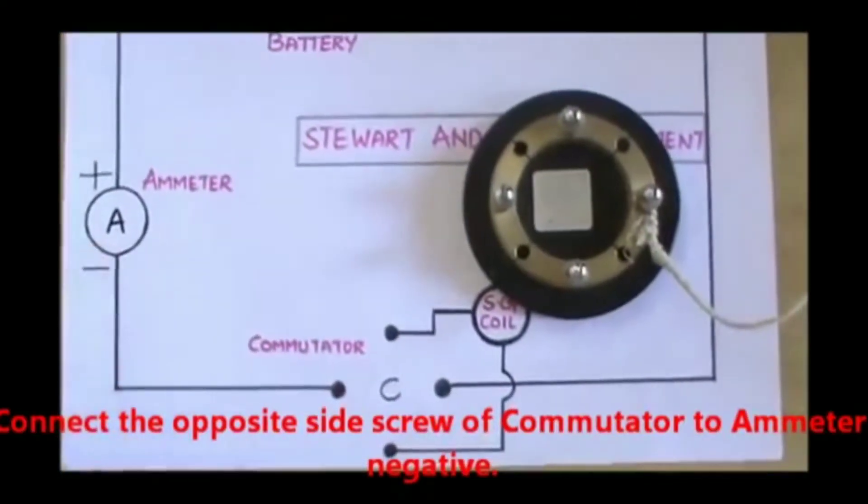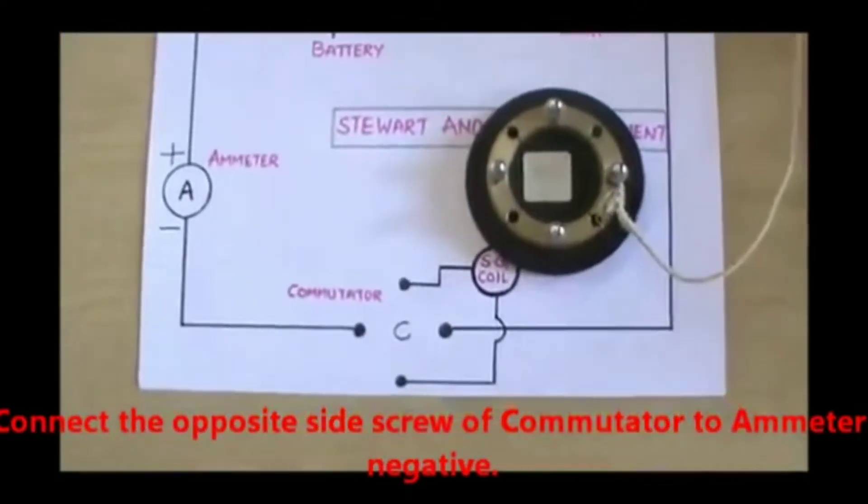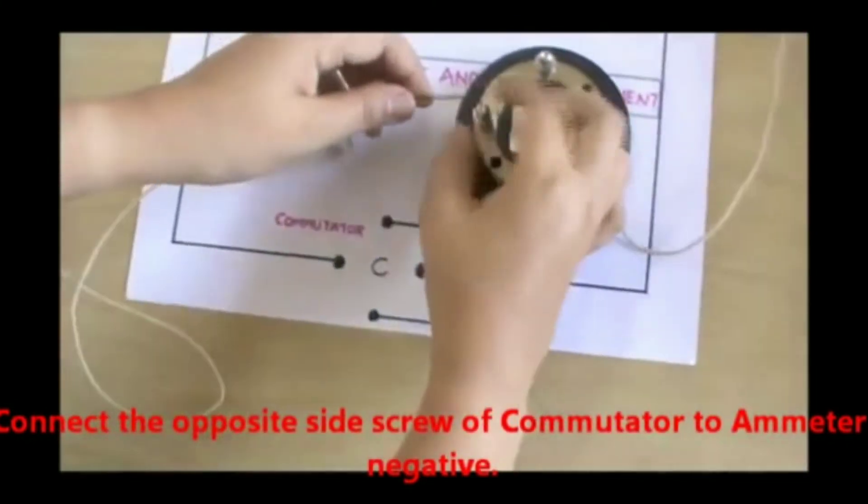Connect the opposite side screw of the commutator to ammeter negative.